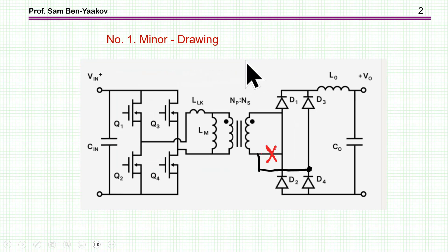So the minor issue is the connection here. As shown originally, there is actually a short of the secondary of this transformer. There is a short here, so the correct connection should be like that. That is, you are feeding the secondary to the input to this bridge, diode bridge rectifier. So this is a minor drafting problem.